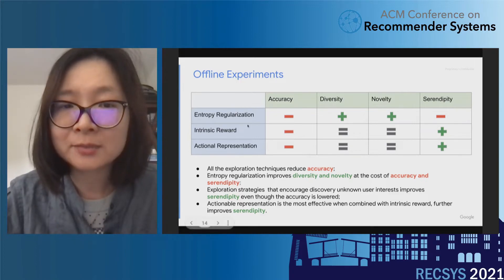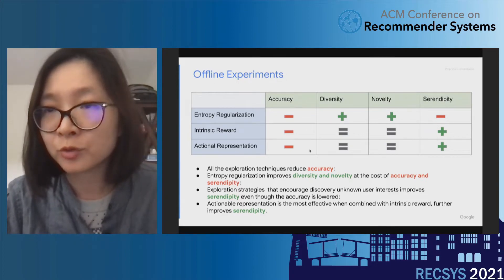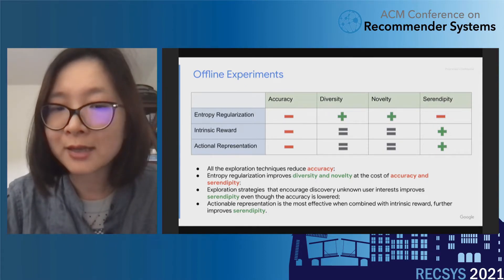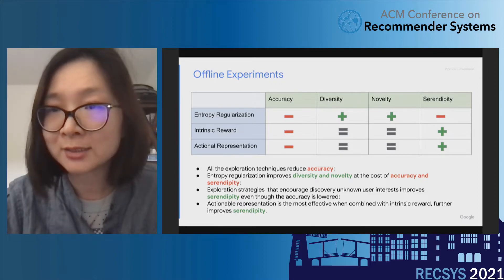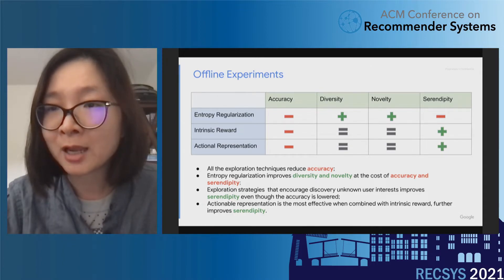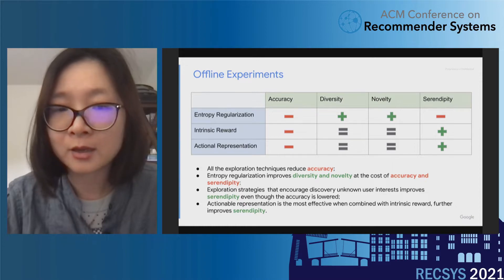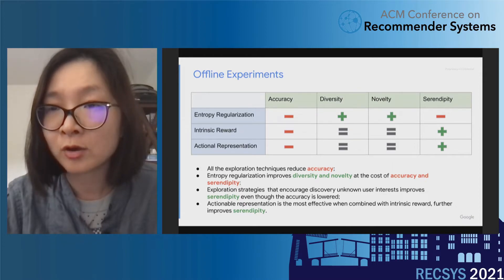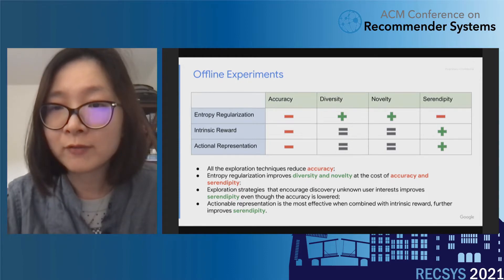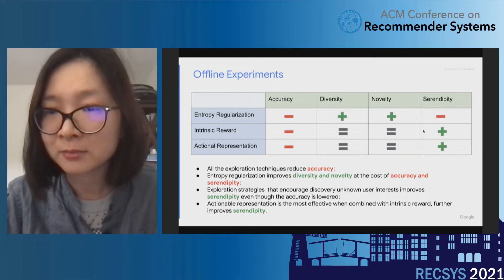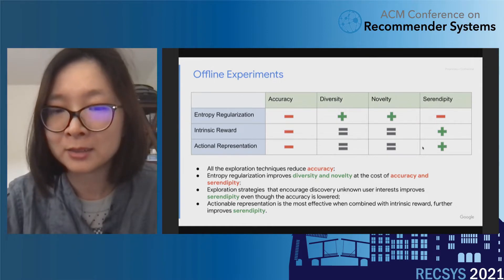Here is a summary of the offline findings. As expected, all exploration strategies reduce recommendation accuracy. Entropy regularization is great at increasing diversity and novelty, but at the cost of accuracy and serendipity. The two algorithms focused on introducing users to unknown or new interests — while also reducing overall accuracy — actually improved the serendipity metric.